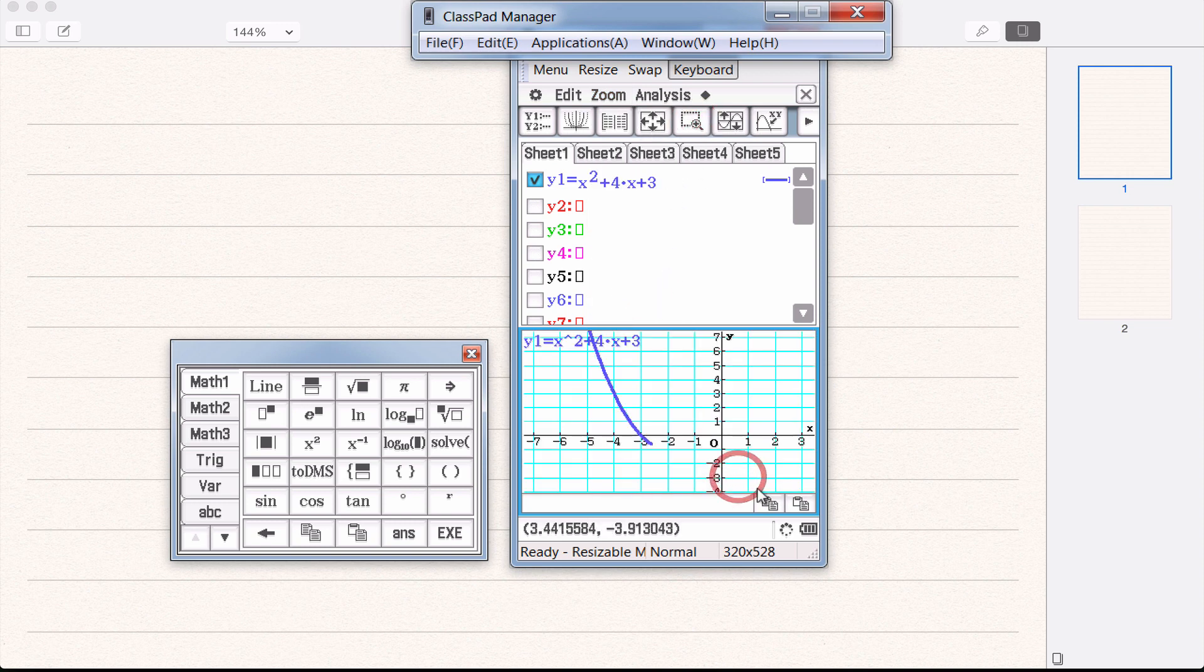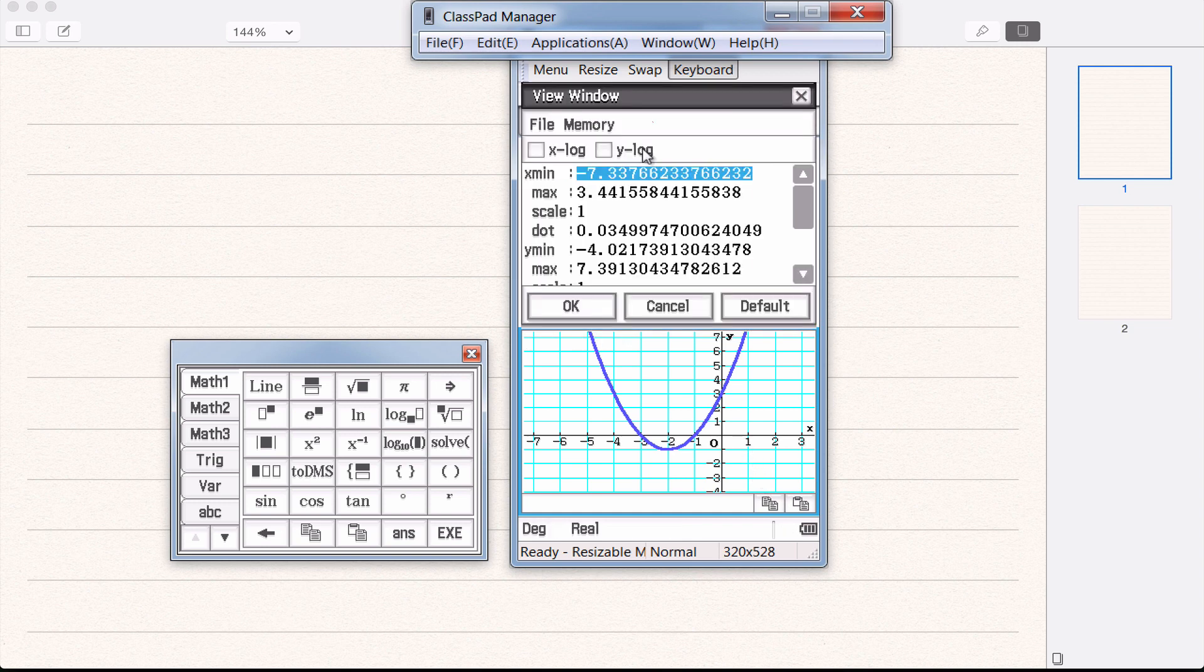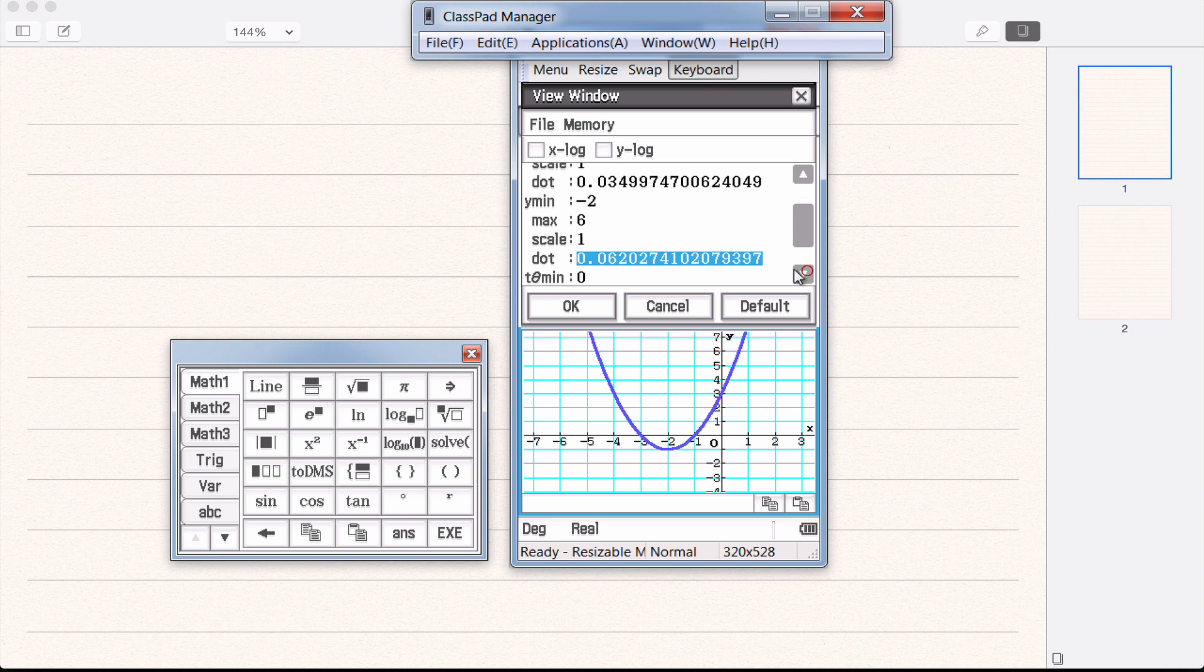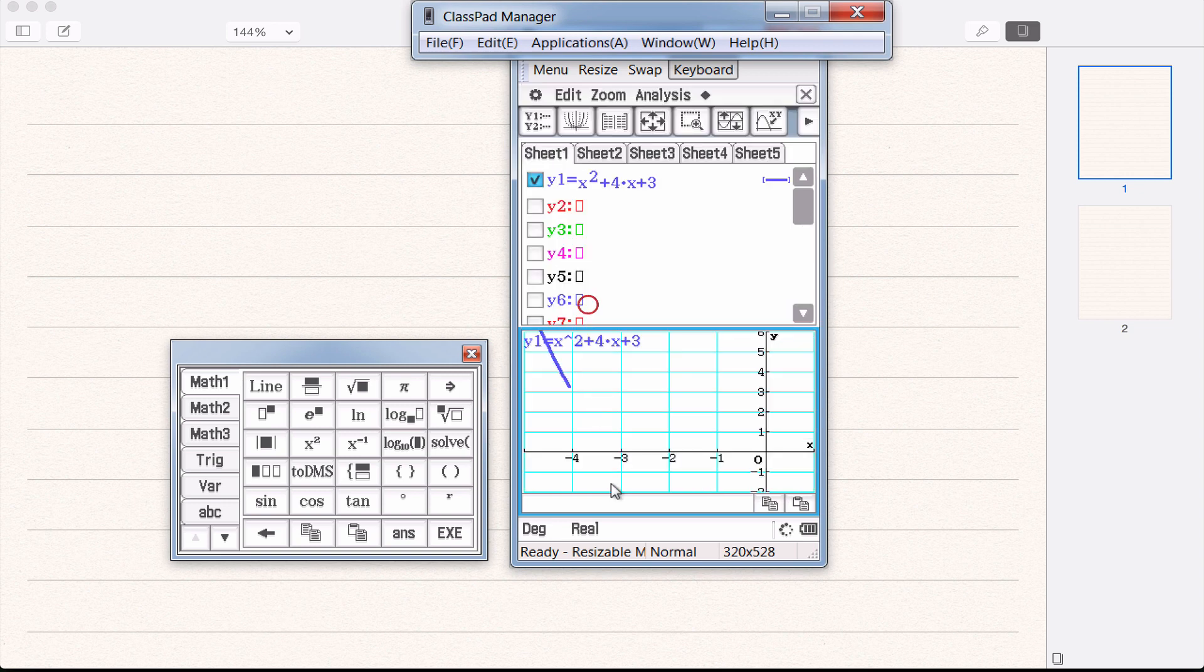This one here will give you, you can choose. So at the moment we're going from x is negative 7 to x is 3. Maybe you want to just go from negative 5 to positive 1. So you can type in negative 5 to maximum of 1. The scale, this is just how much it goes up by each time. This one's going up by 1. So you can leave scale at 1, leave dot at whatever it has, because it will automatically update that. The y minimum, we might go from negative 2 up to 6. So y minimum, negative 2, maximum 6. And you've got your scale of 1, and your dot, leave that there. Click OK, and it will rescale, redraw your graph for you. So that was this button here.